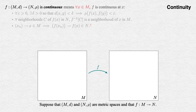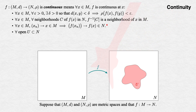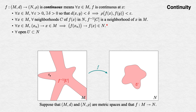Now recall that for a function to be continuous means that it's continuous at every point of its domain. This extra quantifier of 'for all x in M' actually yields even simpler definitions. If we add it to our neighborhood formulation, it tells us something short and sweet about open sets in the codomain. Suppose U is an open set in N. For any point x in the preimage of U, f(x) is in U by definition. Since U is open, U is a neighborhood of f(x). Since f is continuous at x and U is a neighborhood of f(x), its preimage is a neighborhood of x. Therefore the preimage of U is a neighborhood of each of its points, so it's an open set.